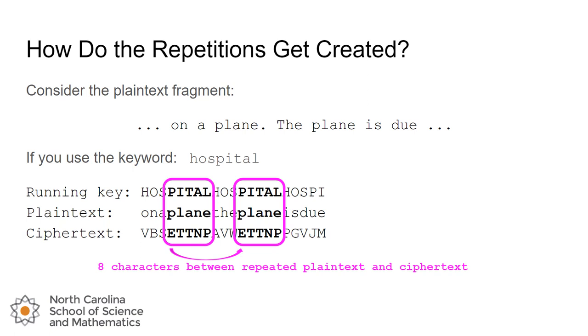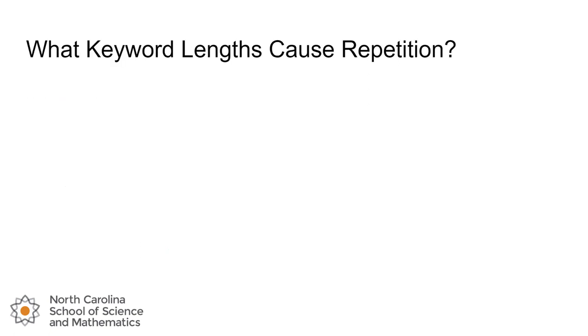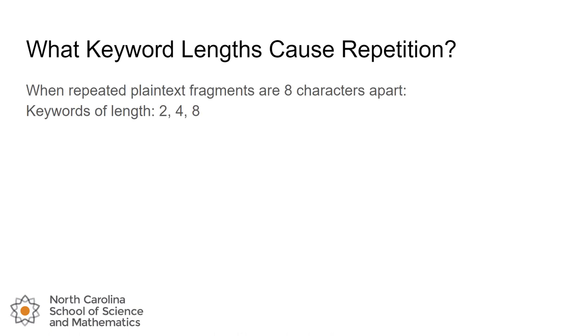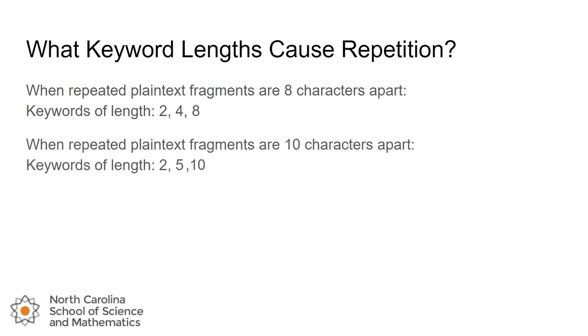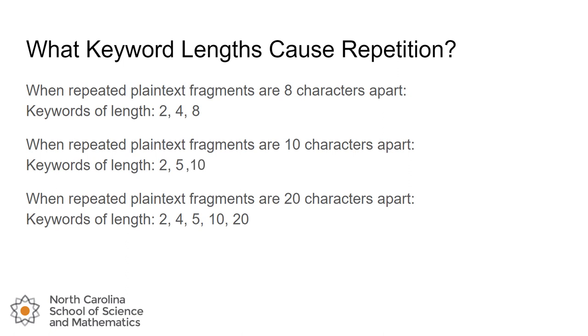You could sit here and do some trial and error and try a bunch of different key lengths and figure out which ones caused the repetition, but for the sake of time I've got some information to share. When we had our characters that repeated in the plaintext eight characters apart, it turns out that keywords of length two, four, and eight would cause that repetition in the ciphertext. If our repeated plaintext were a little bit further apart, maybe ten characters, the keywords of length two, five, and ten would also cause repetitions in the ciphertext. And if we had a plaintext that repeated 20 characters apart, the keywords that would cause repetition would be two, four, five, ten, and twenty. So hit pause on the video here and think about what's the pattern here?